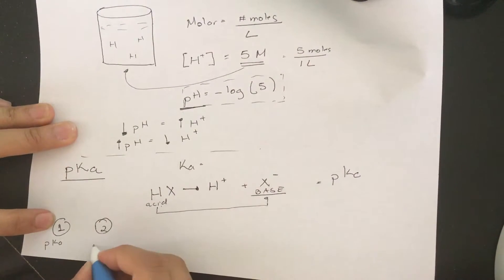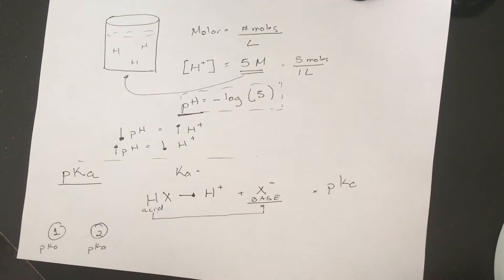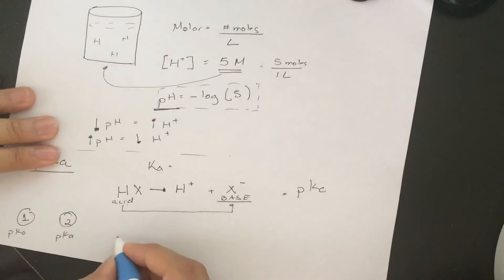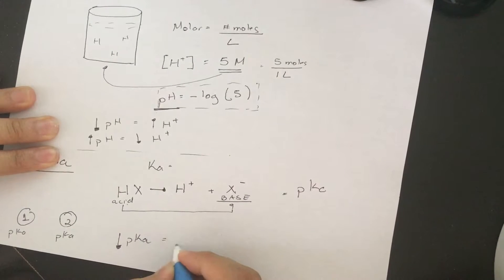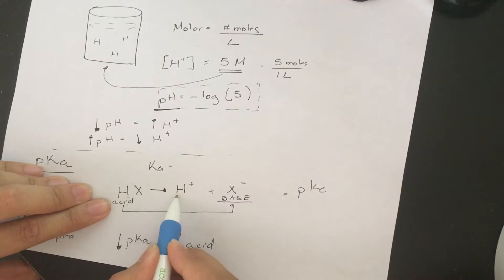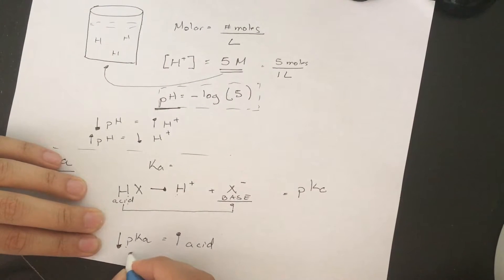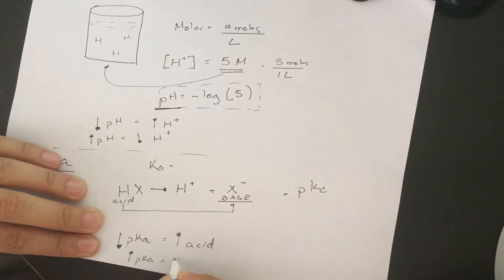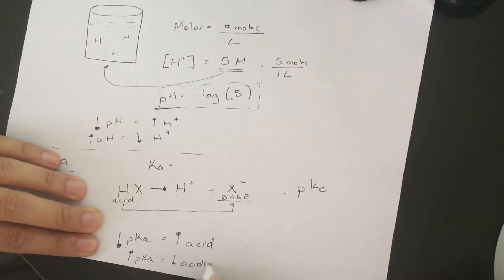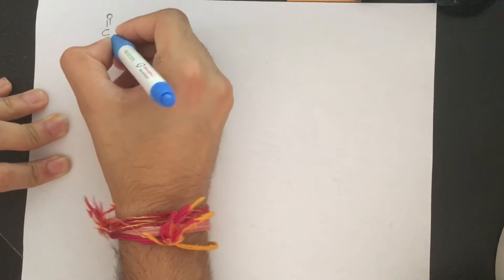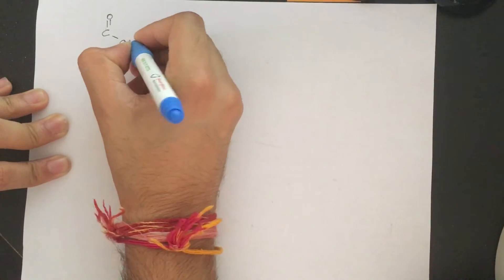If we know the pKa of one acid and the pKa of another acid, just by comparing the numerical values we can figure out which is more acidic. The key thing to know is that the lower the pKa, the more acidic the compound — meaning it is more likely to dissociate into hydrogen ions and increase the hydrogen concentration. The higher the pKa value, the less acidic it is.